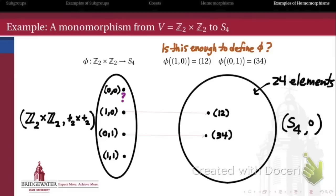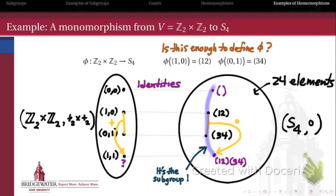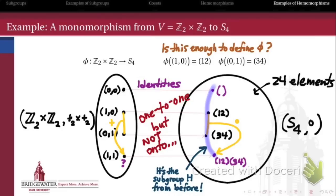Well, yes — because every homomorphism sends the identity element of the domain to the identity element of the codomain. So (0,0) must go to the identity permutation. And because of the product rule, (1,1) — being the result of combining (1,0) and (0,1) with the Klein 4 group operation — must have an image equal to the composition of the images of (1,0) and (0,1) in S4, which is the composition of (1 2) with (3 4), giving the permutation (1 2)(3 4). So this is indeed a homomorphism, and its image is the subgroup H we were looking at before. It is one-to-one, since different elements have different images in S4, but it is not onto, since elements like (1 3) in S4 are not hit. So this homomorphism is a monomorphism.